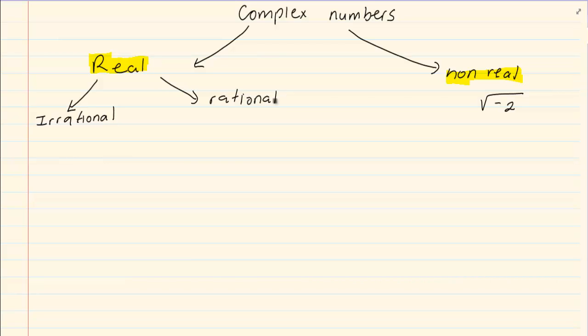Irrational numbers are numbers that cannot be written in a fraction form. Example, the root of 3. Common irrational numbers are pi or the root of 5.